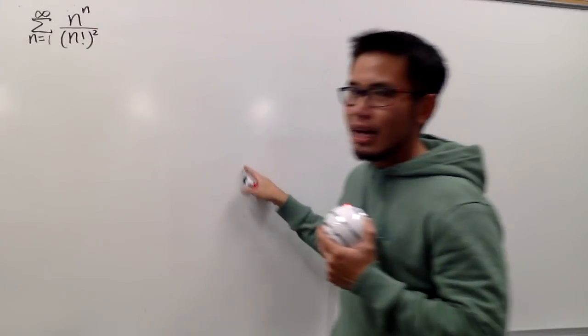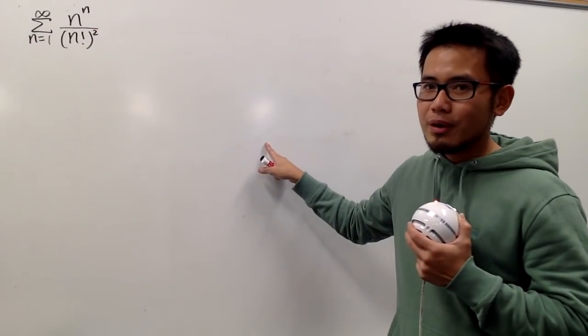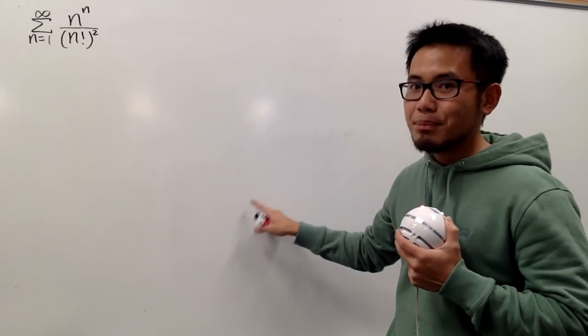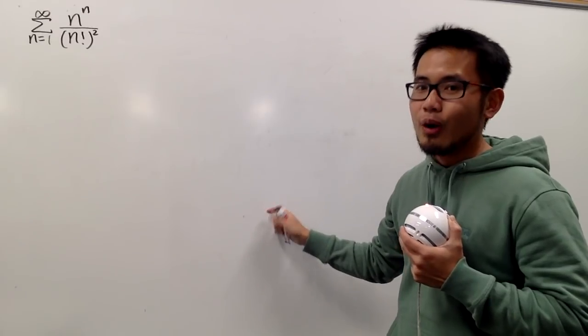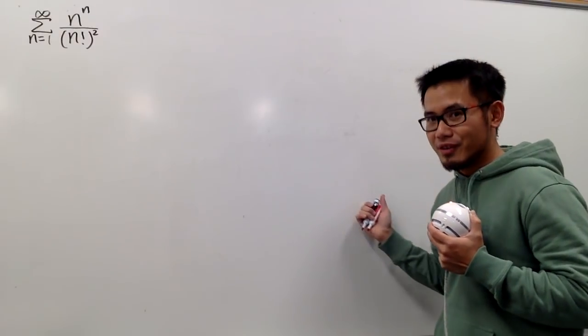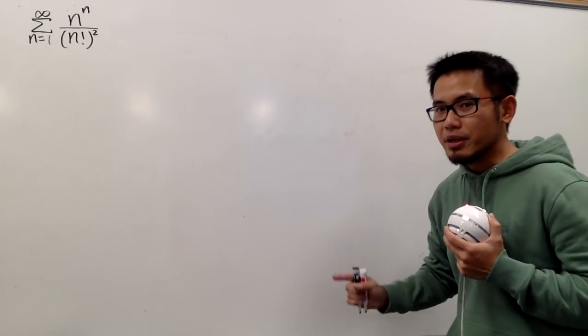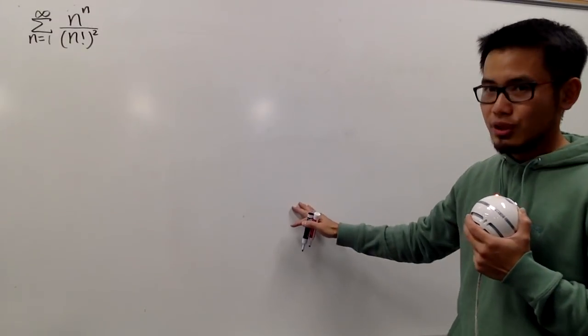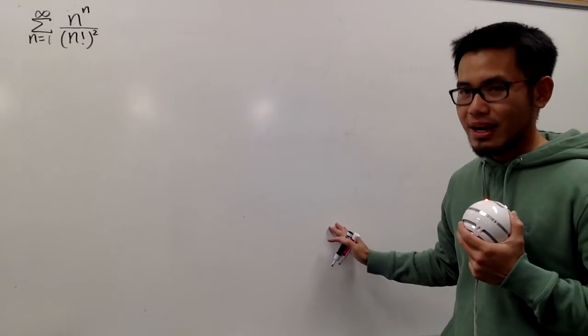Because n to the nth power divided by n factorial will go to infinity, since n to the n is much bigger than just n factorial.